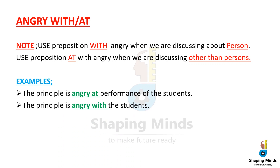Example two: 'The principal is angry with the student.' Here we use 'with' because the principal is directly angry with the student as a person.